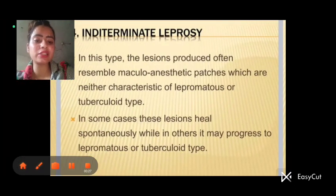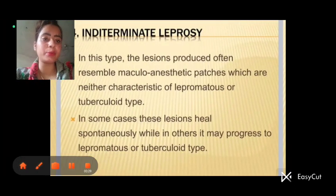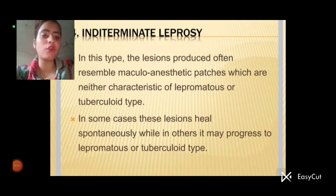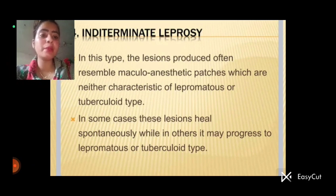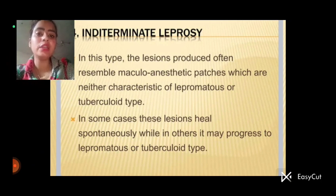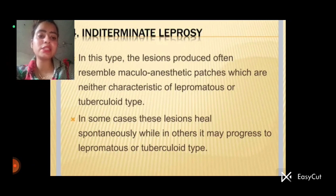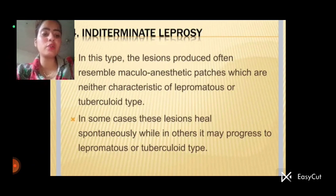Then, the last type is intermittent leprosy. In this type, the lesions produced often resemble macular anesthetic patches, which are neither characteristic of lepromatous or tuberculoid type. In some cases, these lesions heal spontaneously, while in others they may progress to lepromatous and tuberculoid type.